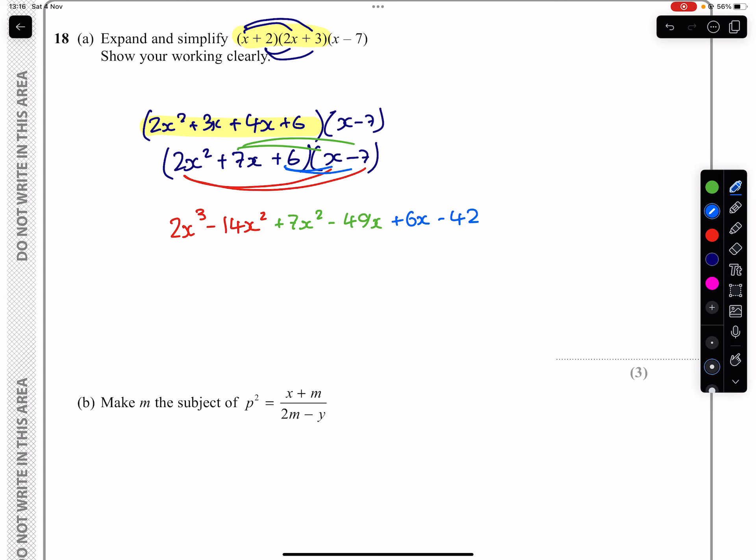We're not done yet, though, because now we need to simplify. Even if the question didn't say it, it would be implied that whenever you can collect like terms like these two or these two, then you would. So that will give us a 2x cubed minus 7x squared minus 43x minus 42 as our answer for that.